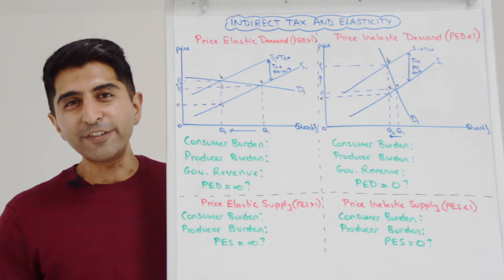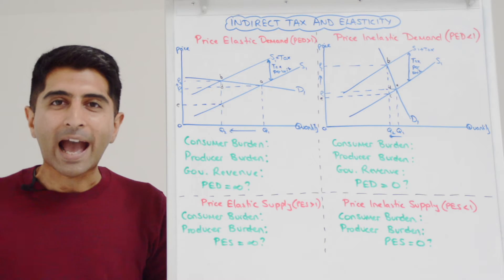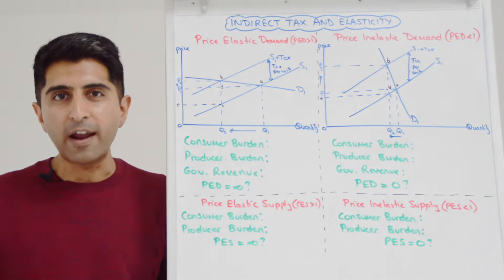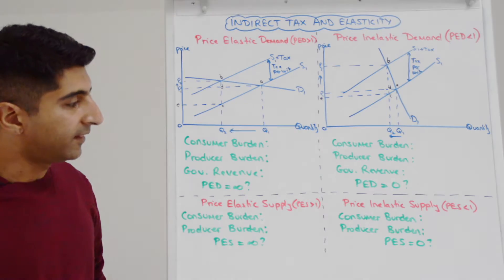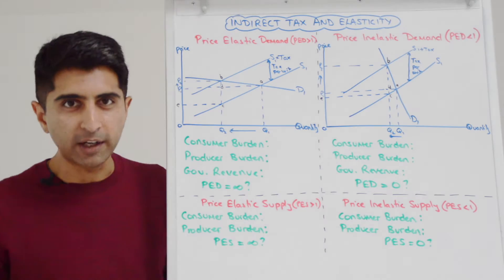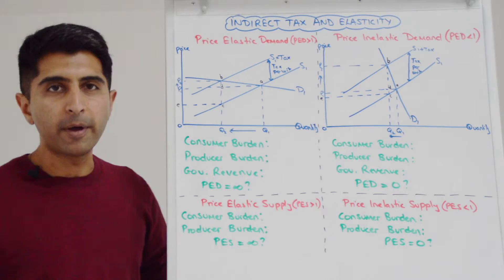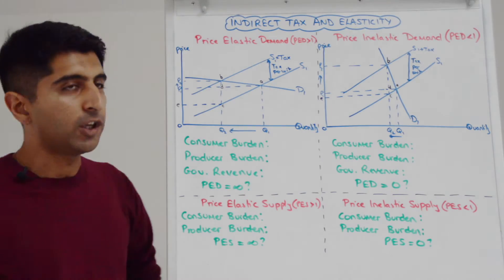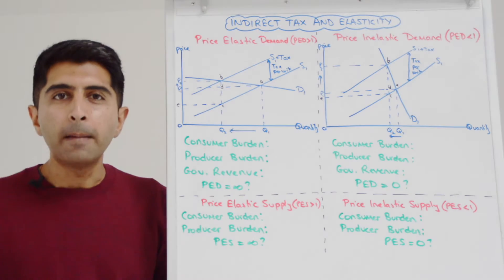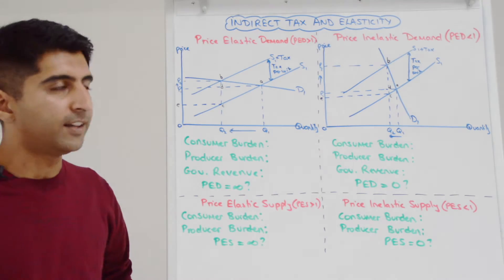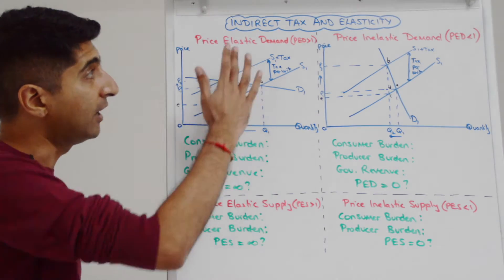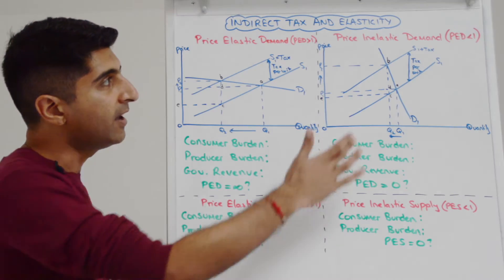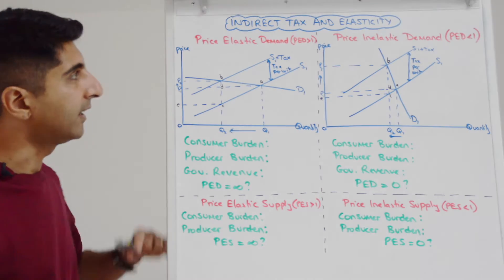Hi everybody. In this video, let's look at how the key impacts of an indirect tax can vary depending on elasticity. The impacts we're going to focus on are consumer burdens, producer burdens, and at times government revenue. Let's start by looking at price elasticity of demand — specifically, if demand is price elastic, what will the key impacts be versus when demand is price inelastic.